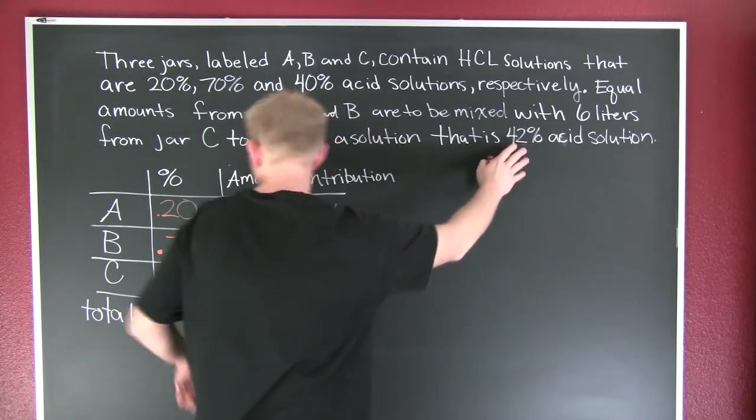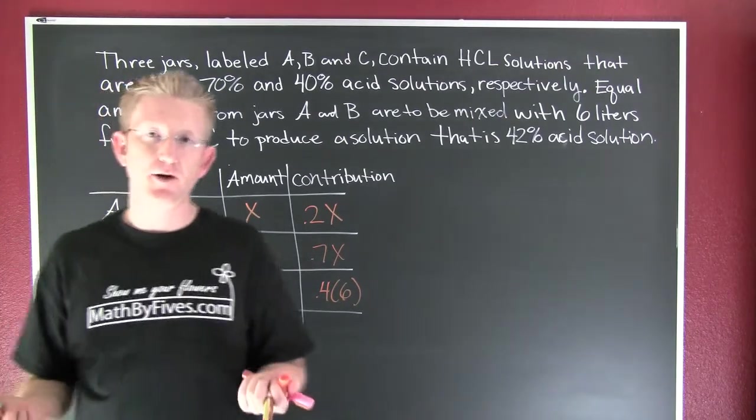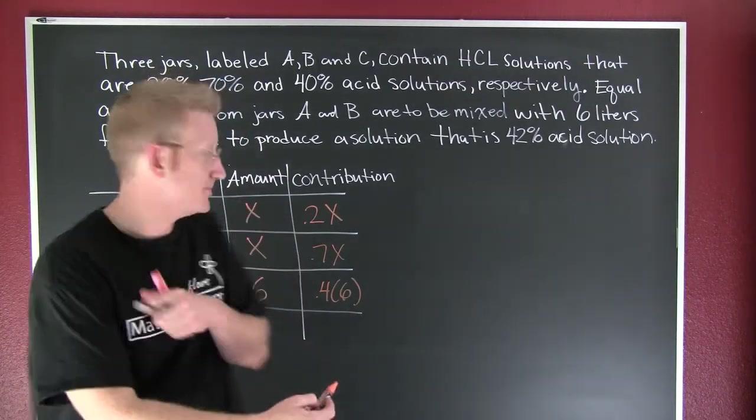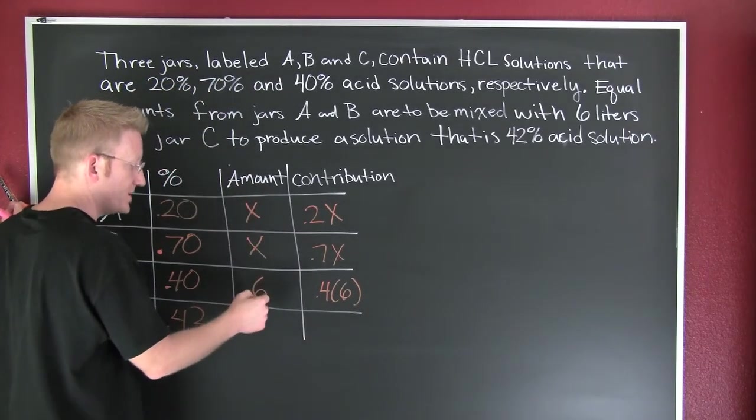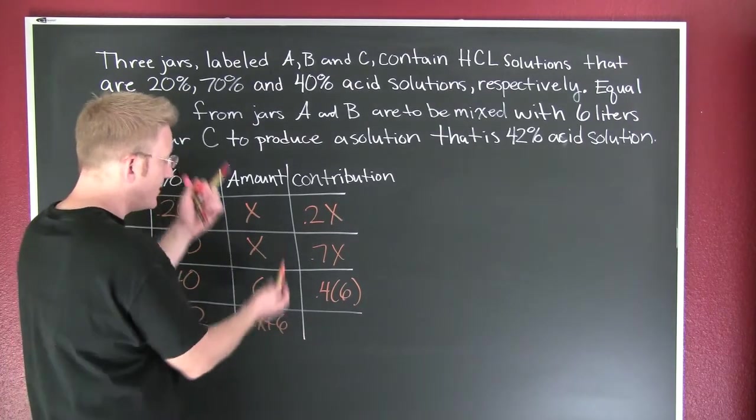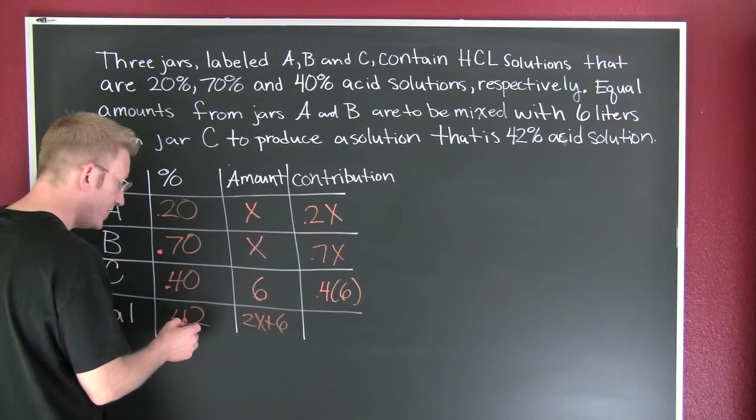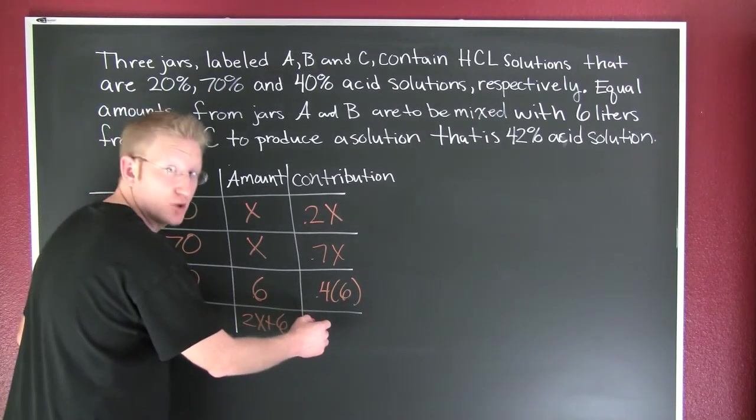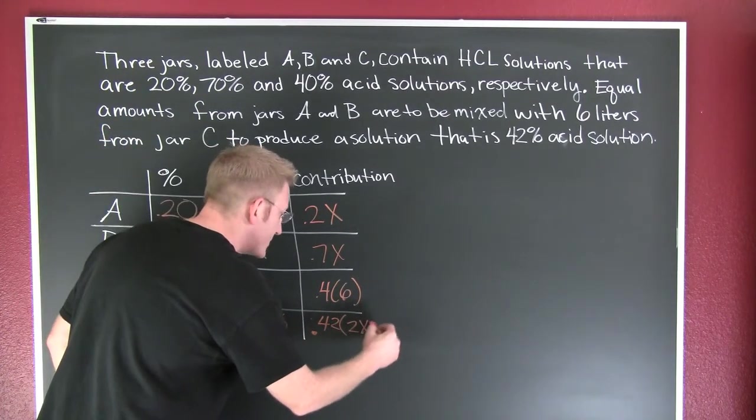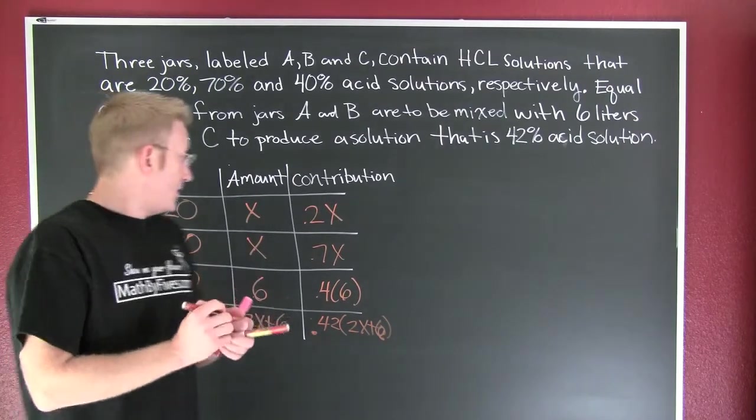And there's more that we need to put out. Our final solution needs to be 42% acid solution. This is 42%. Great. We need to figure out the amount that's going to be in our final solution. For our solution. Here I see that I have this amount plus this amount plus this amount is going to be my total amount. Here it appears that I am going to have 2X plus 6. That's going to be the total liters of solution that I'm going to have. So then 42% of this amount is going to be my total. So this is 0.42 times 2X plus 6.